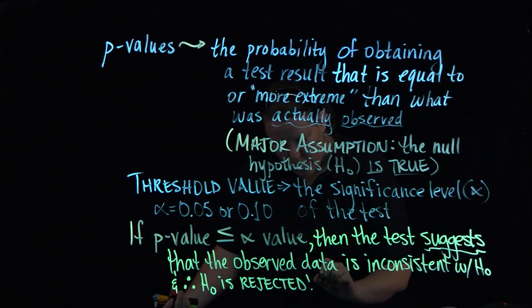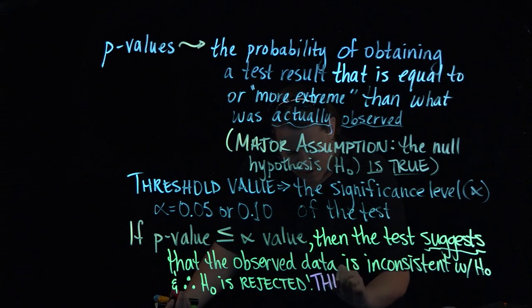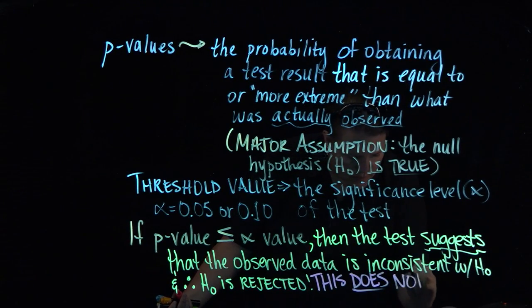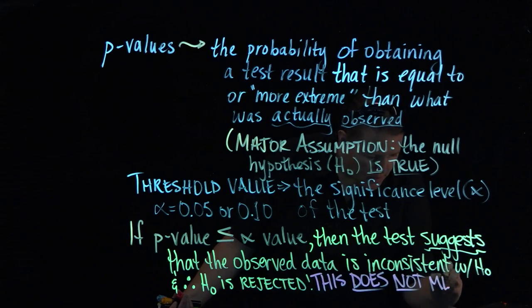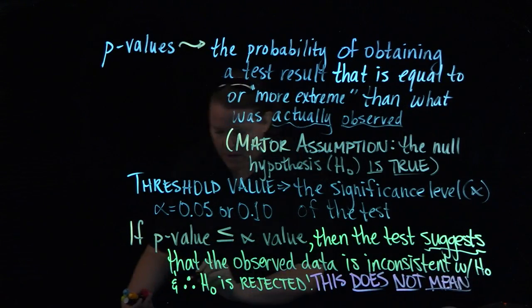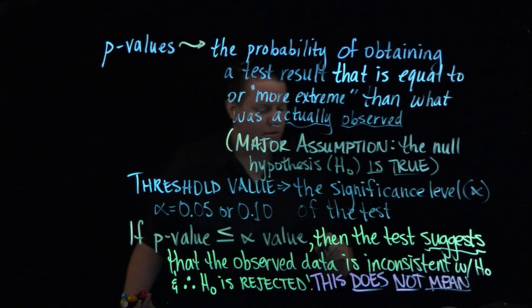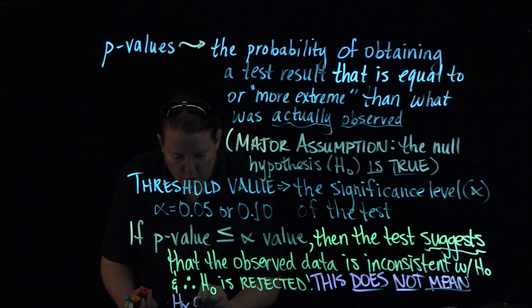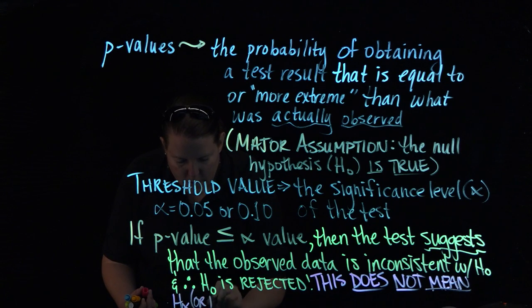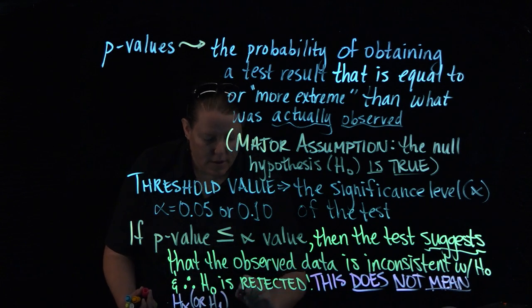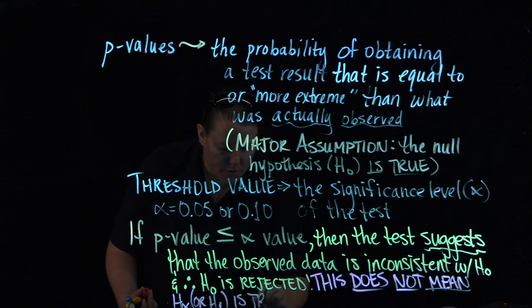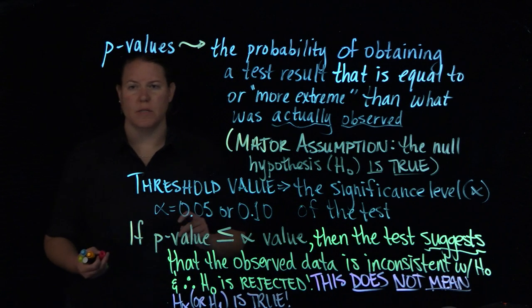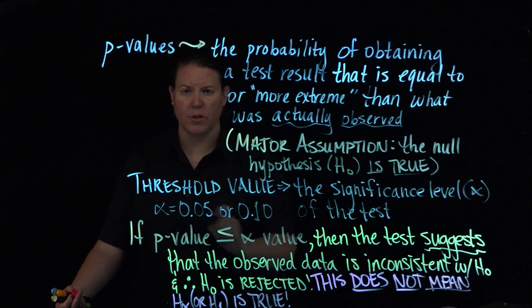So this does not mean, can I write this low? Maybe so? Maybe so? You guys see that? H alpha or H₁ is true. That is not what we're saying. What we're simply saying is that we're rejecting the null.